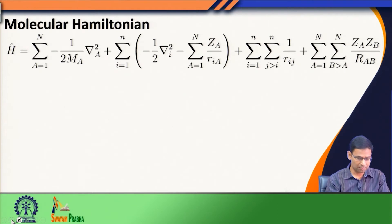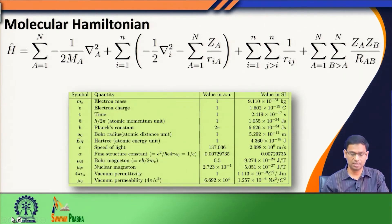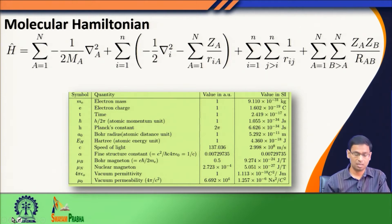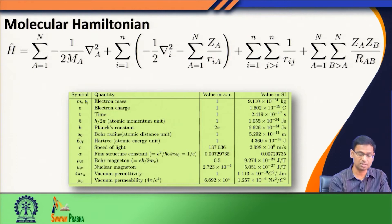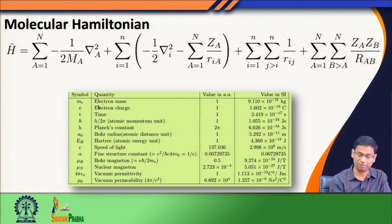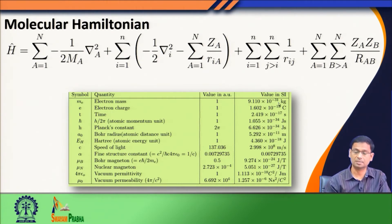One thing you might have already noticed is that this Hamiltonian is written in the so-called atomic unit. In atomic unit, we have made some constants equal to 1. For example, the unit of mass is given by the electron mass in atomic unit, so the value of the mass of the electron is one atomic unit, whose SI value is 9.1 × 10⁻³¹ kilogram.